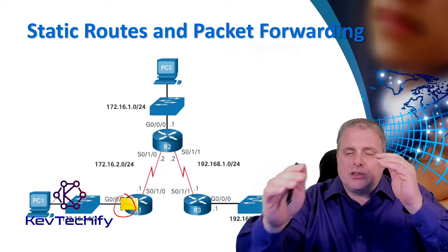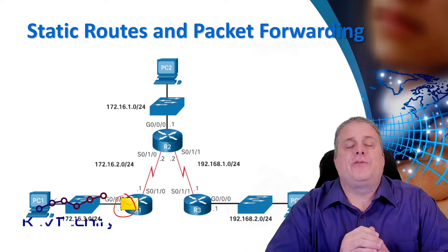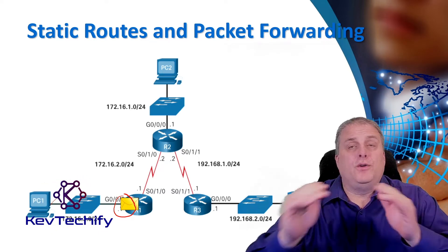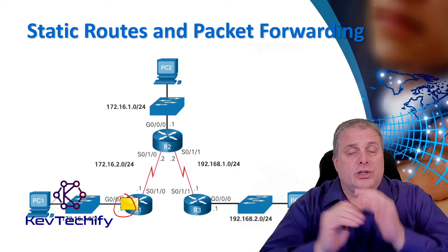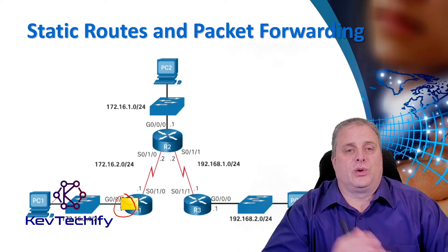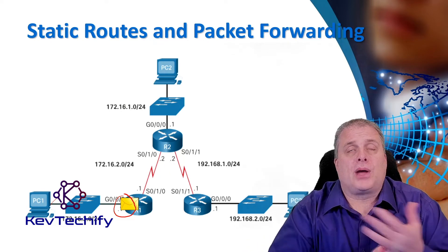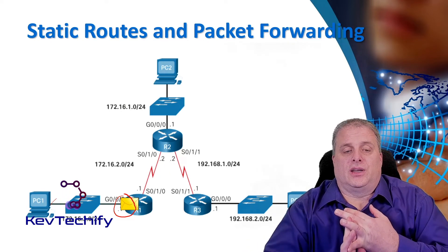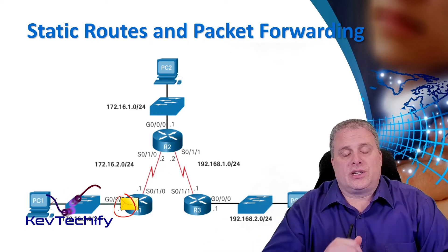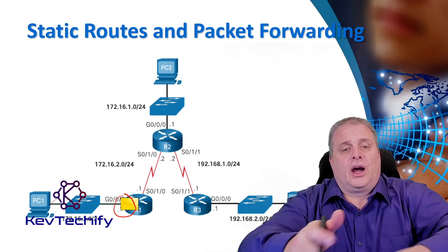If it doesn't match any of the routes in our routing table, hopefully there is a default route set up on R1 that says, if you don't match any entries in my route table, we're just going to send you on to the next device. We're going to send you on to R2, either using the next hop IP address or the exit interface. R1 encapsulates it in a frame and sends it off to R2.